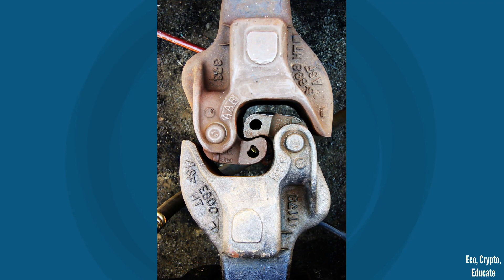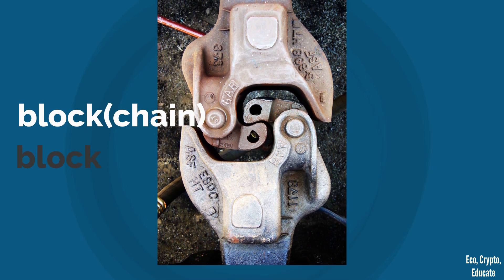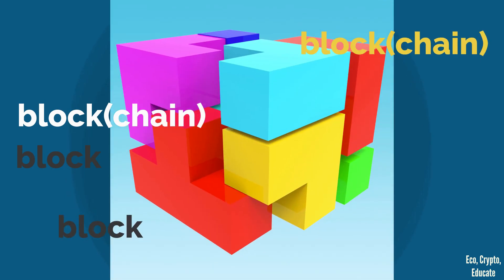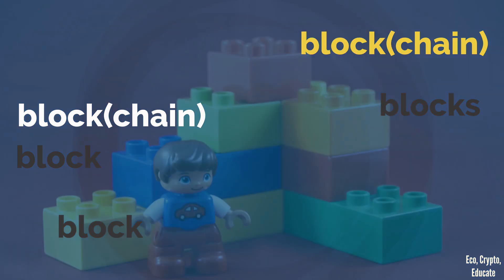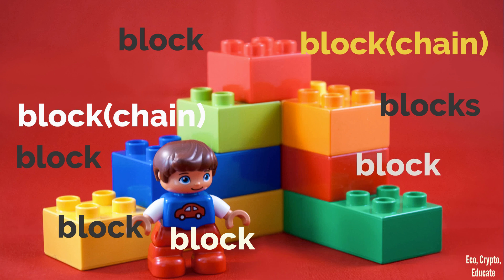Hash functions secure the blockchain. Each block in the blockchain contains a hash of the previous block, which creates a chain of blocks linked together. Think of each block as a Lego block — the hash of each block is like a unique identifier that connects it to the previous block, just like how the studs on a Lego block connect to other blocks.